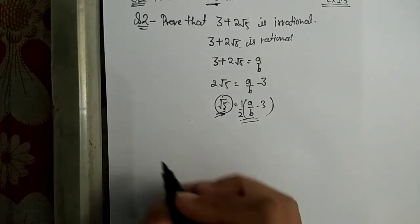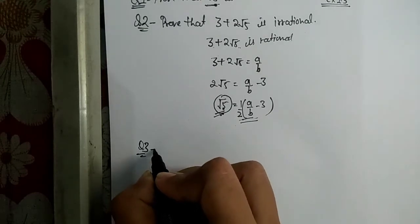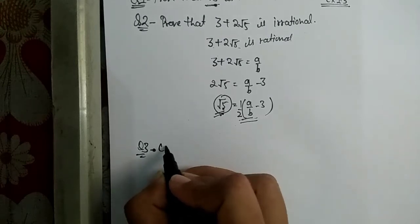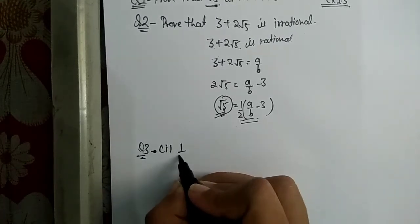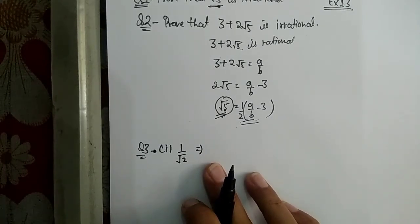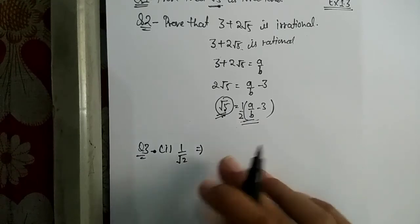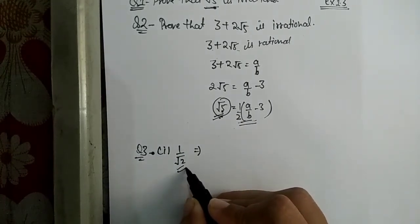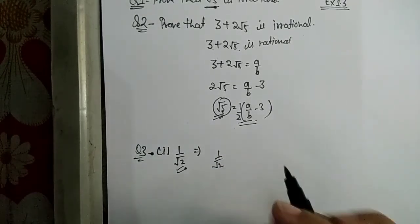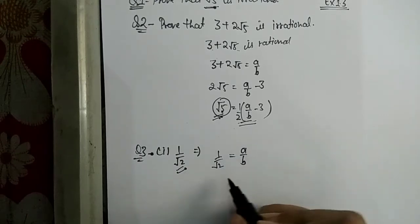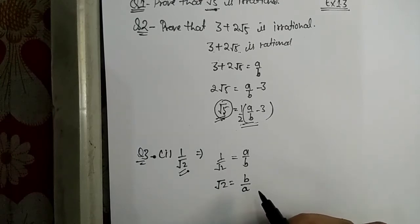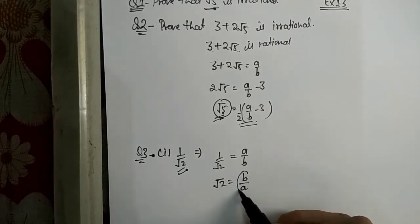Question number 3 has three parts. In the first part, we have to prove that 1/√2 is an irrational number. We will do the same method here. Let 1/√2 be a rational number. Then 1/√2 = a/b. Therefore, √2 = b/a.